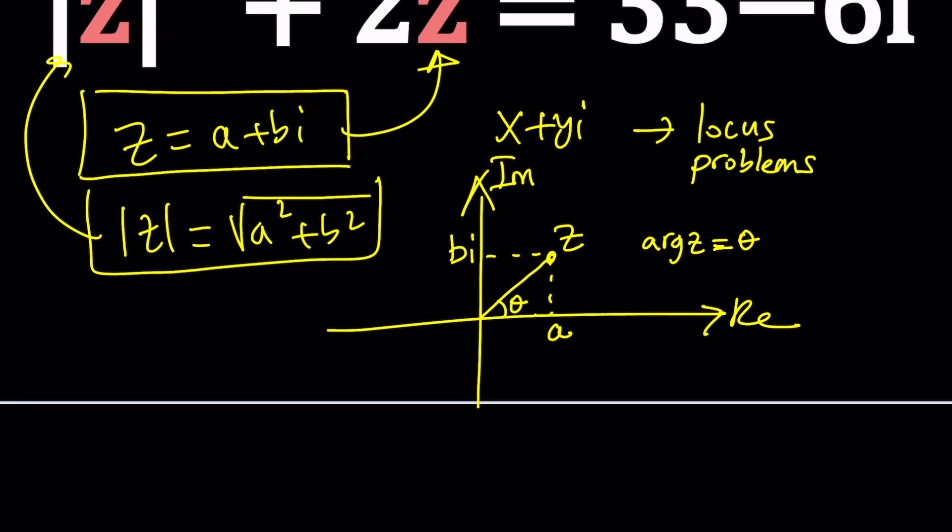By the way, if you square the absolute value of z, you get a squared plus b squared, which is equal to z times z bar. And z bar is the complex conjugate of z. It's defined as a minus bi. So if you multiply a plus bi and a minus bi from difference of two squares, you get a sum of two squares.